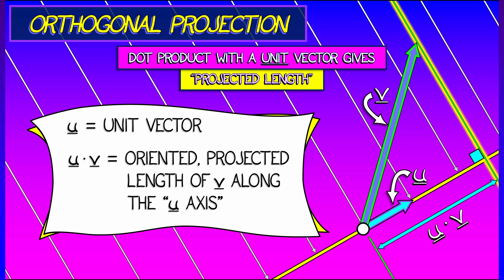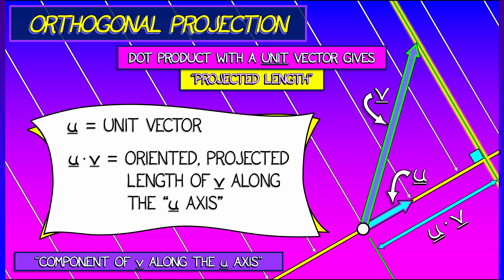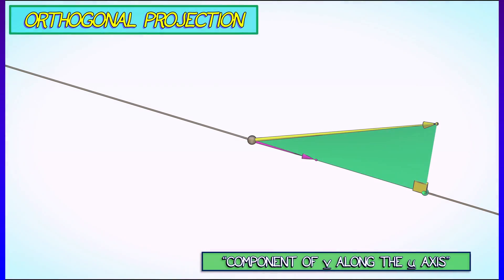That length is u dot v with the proviso that we have an orientation with that as well. So if u and v are pointed in the same direction, then we're getting a positive number. But if v is pointed in the opposite direction, then it's tracing out a negative component along the u axis. And that dot product will be negative.